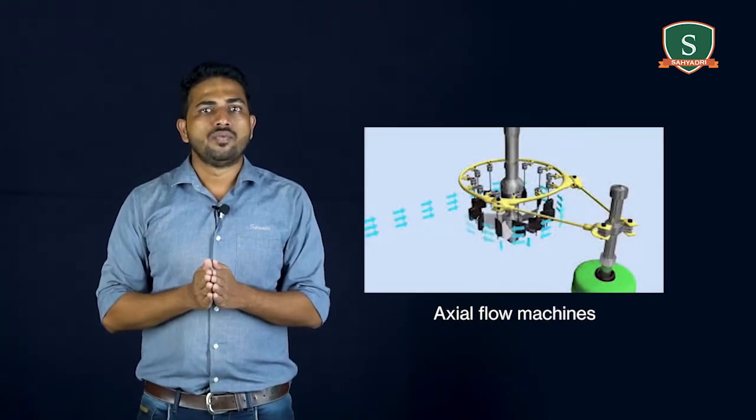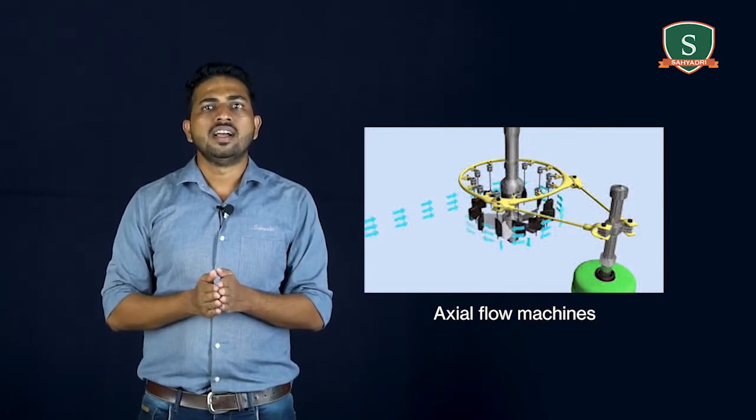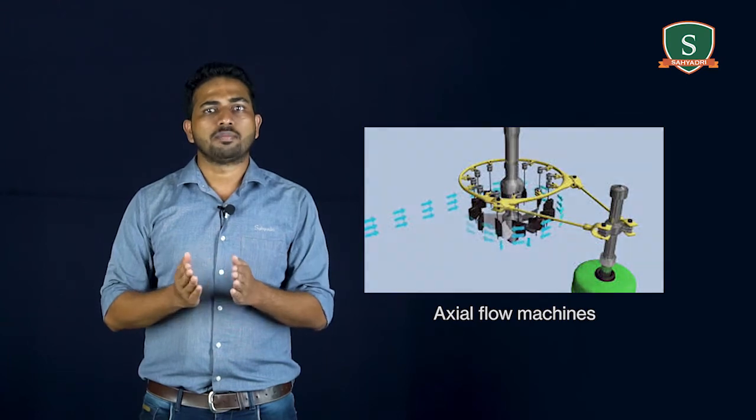Now fourth classification is according to the direction of fluid flow. Axial flow machines: fluid enters the machine axially and leaves axially, that means parallel to the axis of shaft. Example, Kaplan turbine.